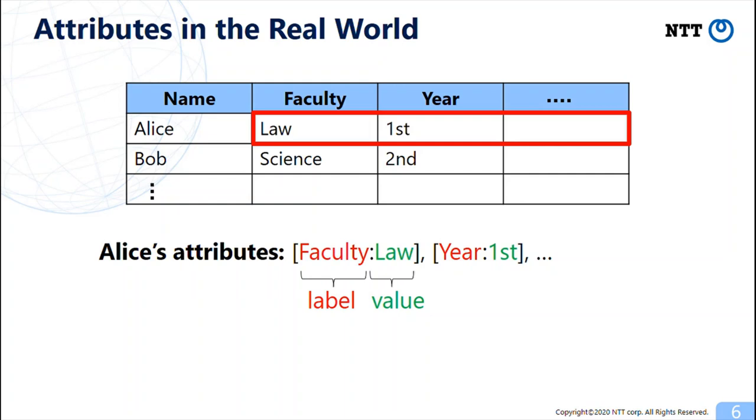As shown in the picture, an attribute typically consists of a label and value in many cases. Like, Alice's attribute is faculty role and year first.